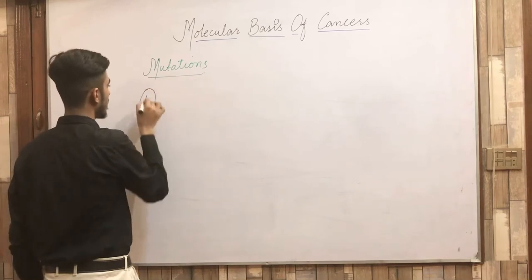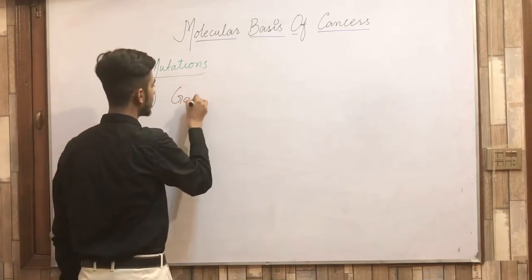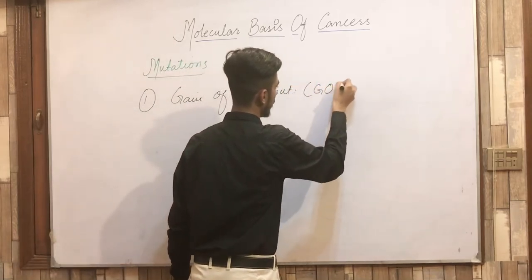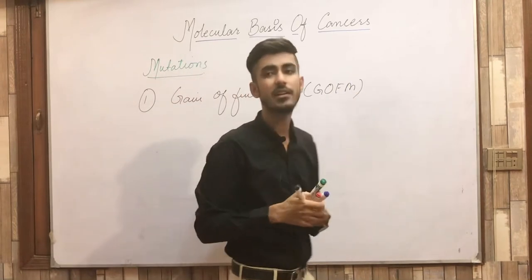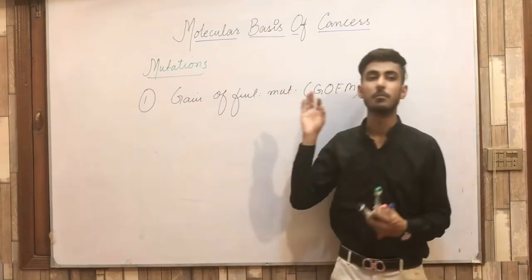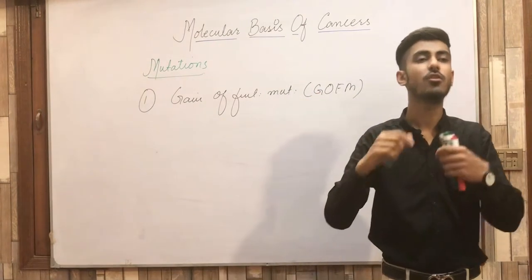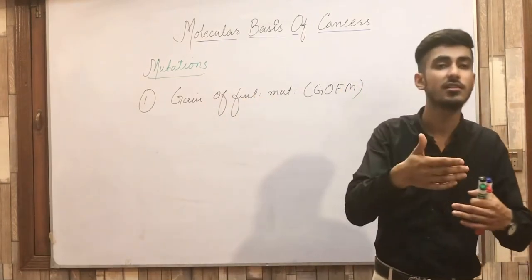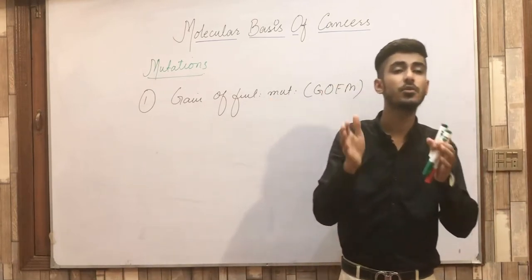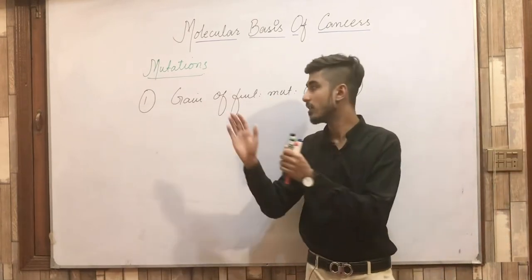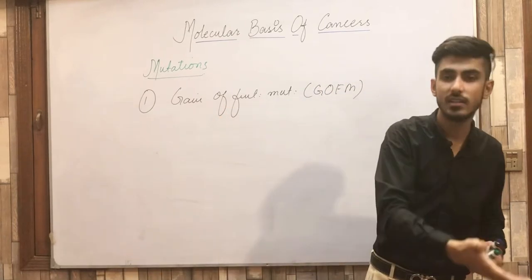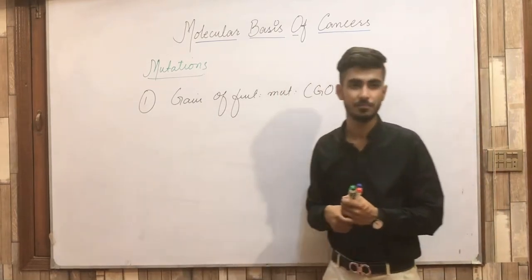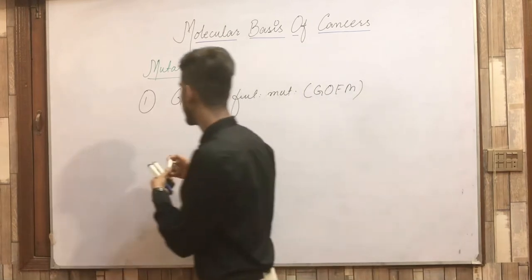There are two types of mutations that occur in genes. One of them is the gain of function mutation. As its name indicates, gain of function means if the gene is carrying out growth and there is a gain of function in that gene, its function will be increased. If it is normally producing 10 cells, after gain of function mutation it will start to produce 20 cells. So the function of the gene is increased.